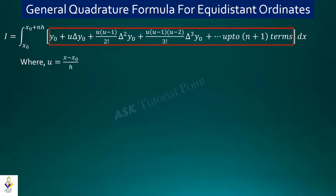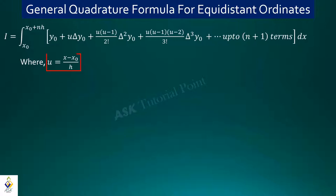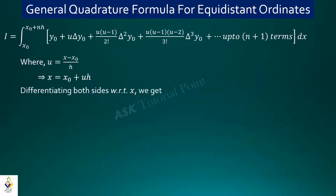We have a function to integrate with respect to x, but inside the function we have the transformed variable u. So by using the substitution method, we equate dx in terms of du. First we cross-multiply to get x = x₀ + uh. Differentiating both sides with respect to x: 1 = h·(du/dx), so dx = h·du.